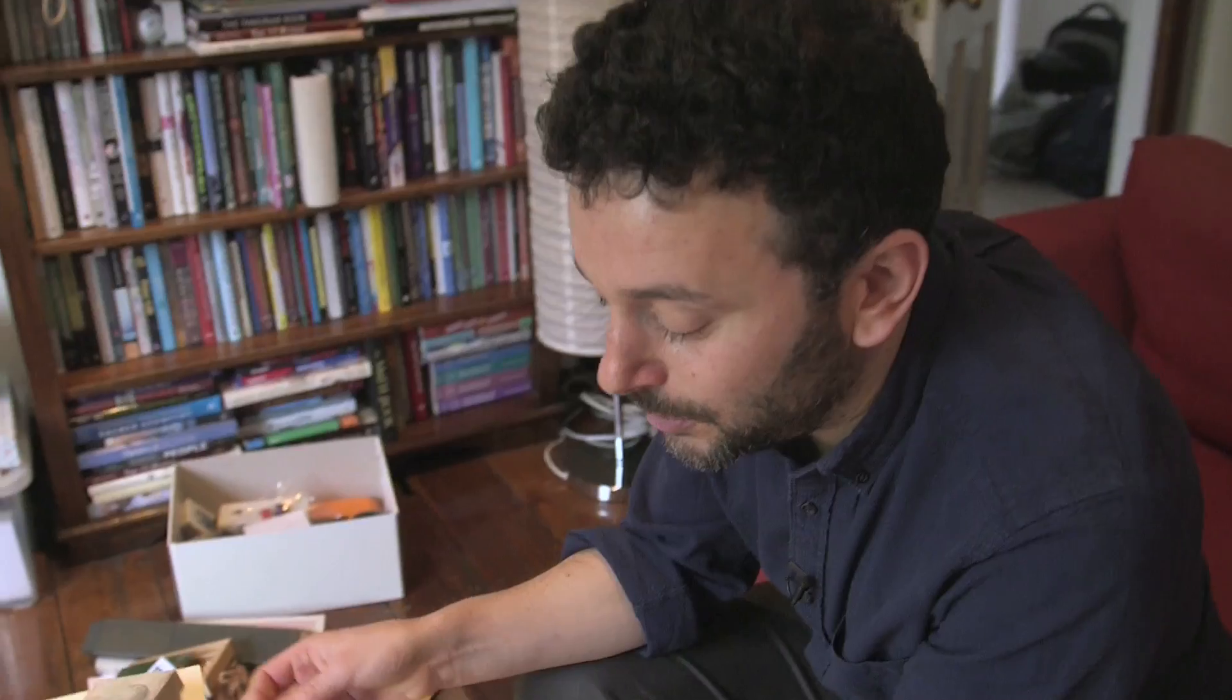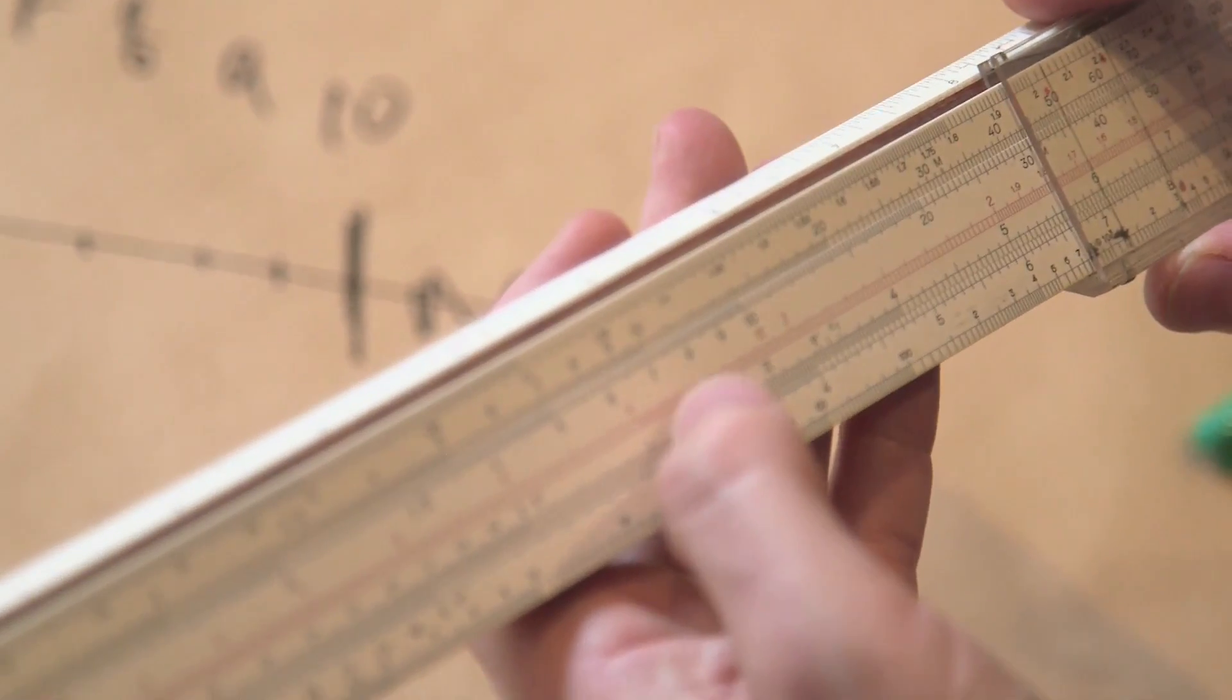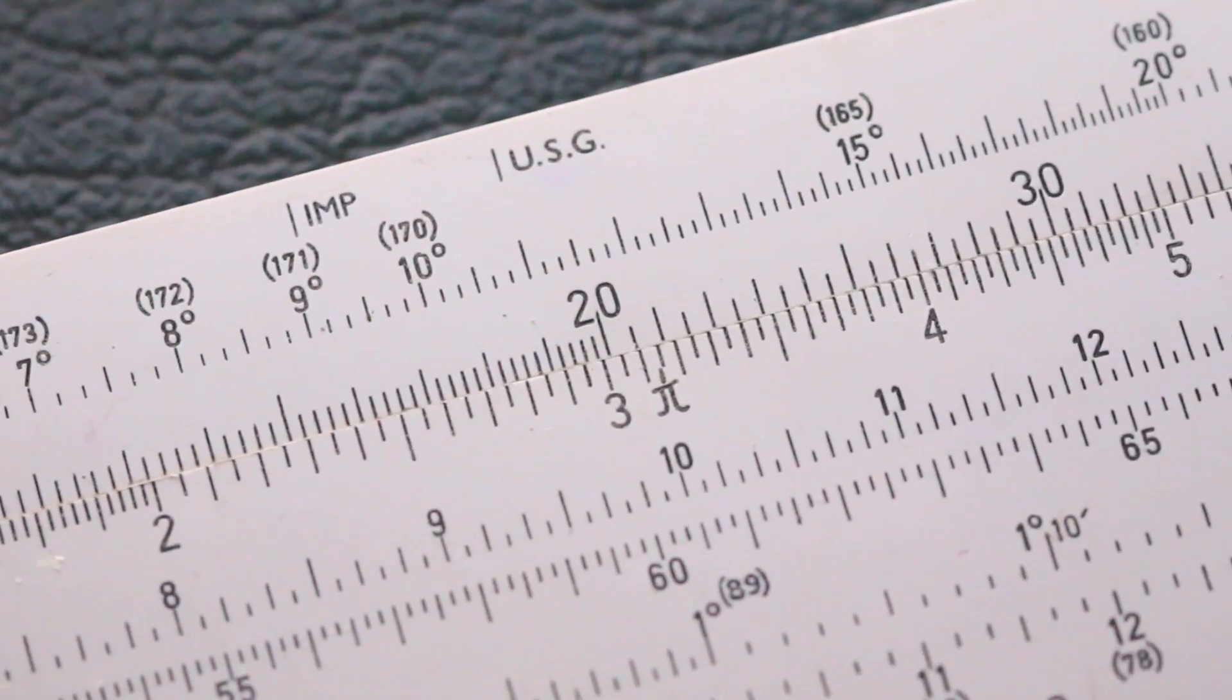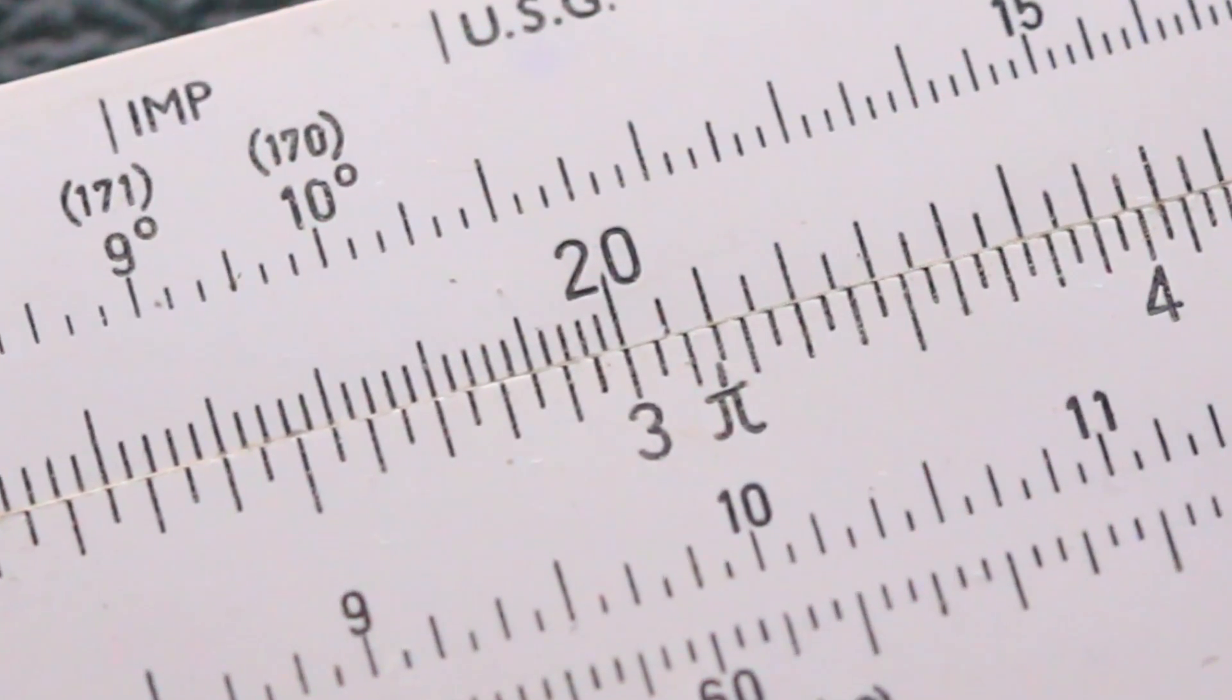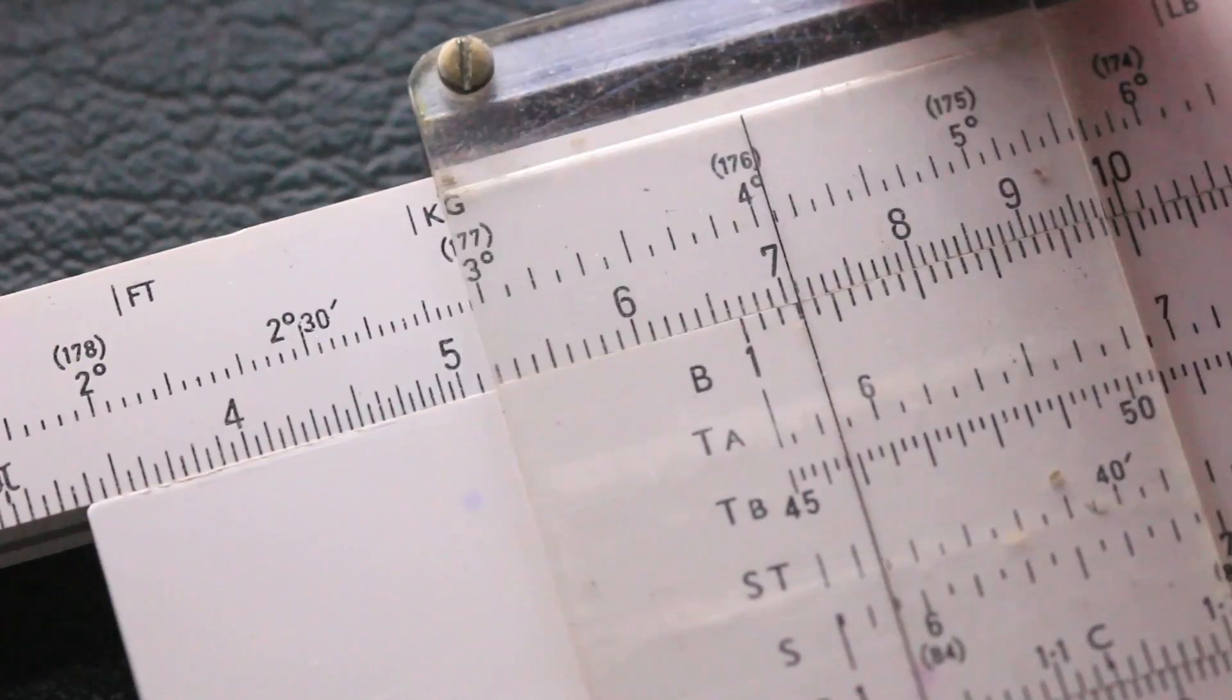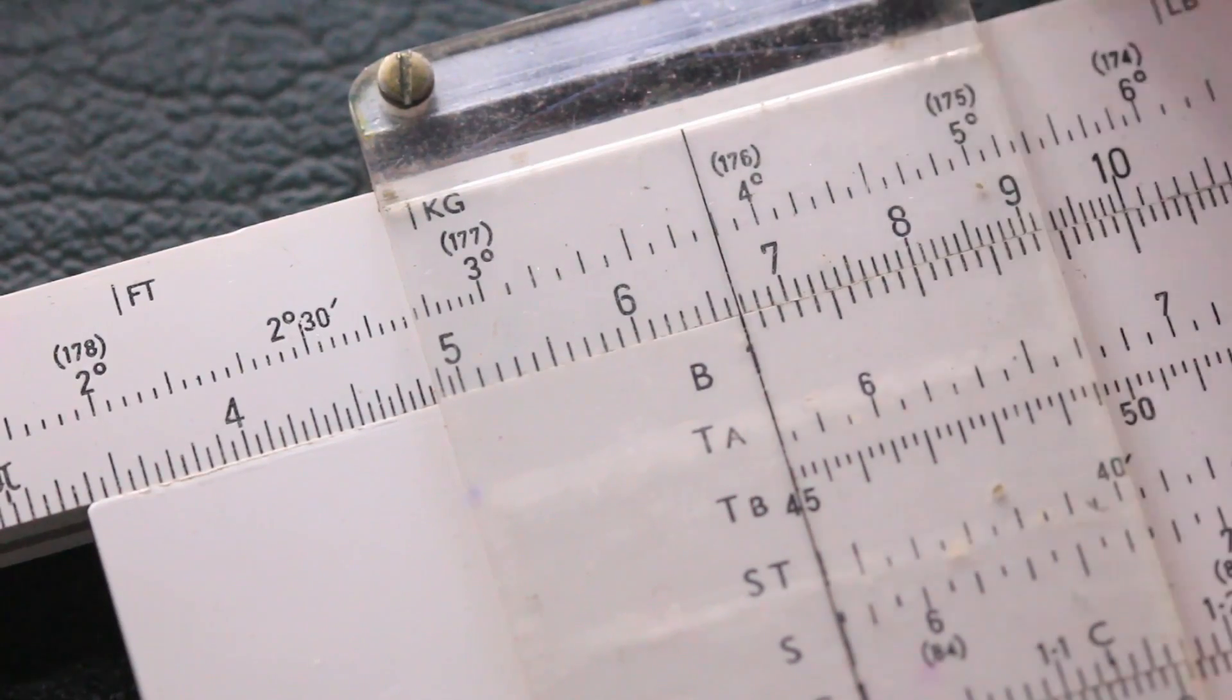Multiplication is addition, so division is subtraction. So let's say we want to divide twenty by three. We go to twenty, and we just basically need to take away three. So we put three where the twenty is there, and go down to one, and where is one, we use our hairline here. Oh look, it's six, between 6.6 and 6.7.